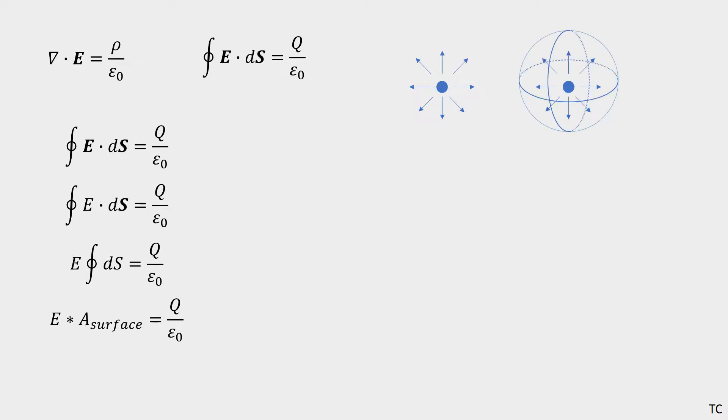Your Gaussian surface that you're integrating over is a sphere because the electric field of a point charge radiates spherically outward, so if you choose a sphere as your surface, it's symmetrical and E dot dS is the same at every point along the sphere.